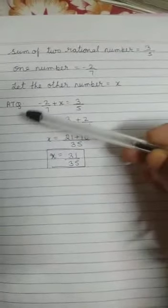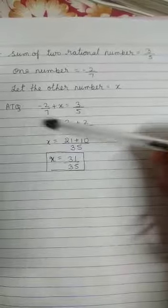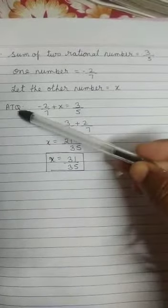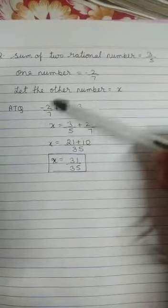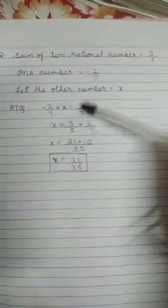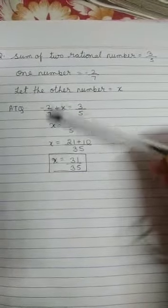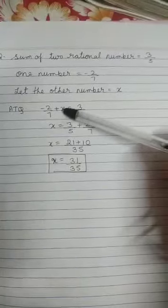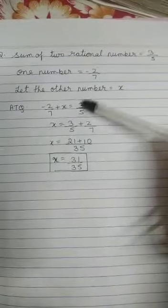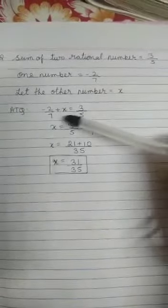We arrange according to the question. According to the question, these two numbers total is 3 upon 5. So first number is minus 2 upon 7 and another one is X and their total is 3 upon 5. We have to find the value of X.